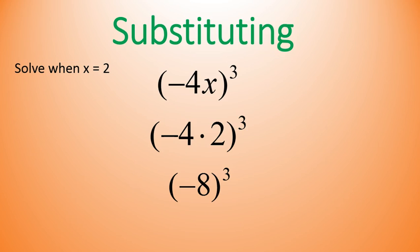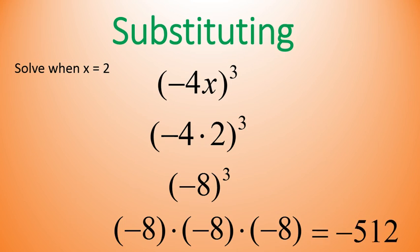Or in other words, negative 8 is being multiplied times itself 3 times. Negative 8 times negative 8 times negative 8. A negative times a negative gives you a positive. Then we multiply that times another negative, and our final answer will be negative 512. That's how we solve when x was equal to 2.